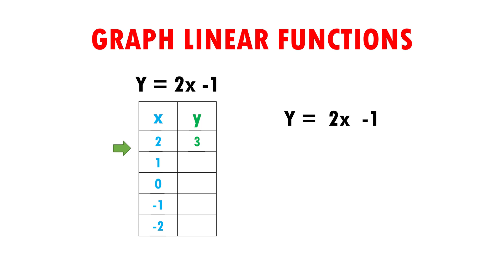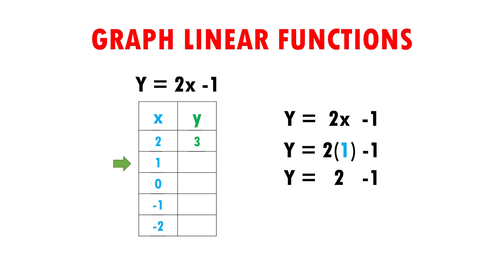Now I am going to continue with number 1. This means that instead of putting the letter x, I am going to put its value, which is 1. y equals 2 times 1 minus 1. y equals 2 times 1 gives me 2, and the minus 1 goes down exactly the same. I have y equals 2 minus 1 gives me 1. Therefore, when x is worth 1, y is also worth 1, and I put it in my table.